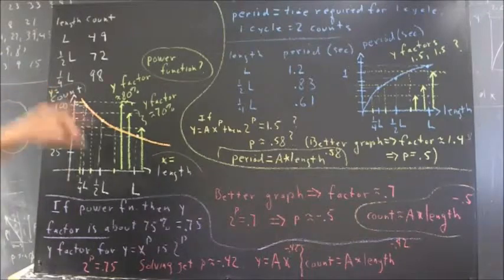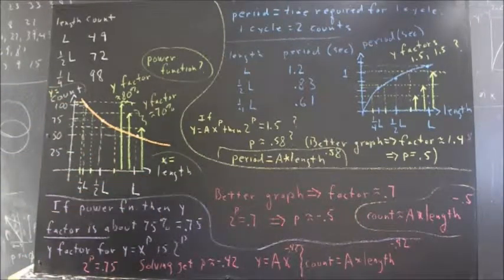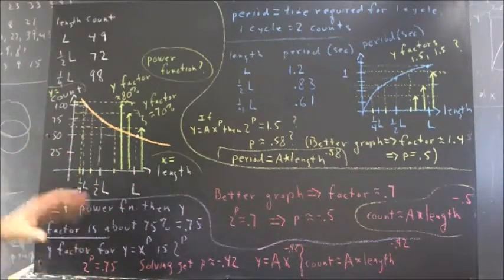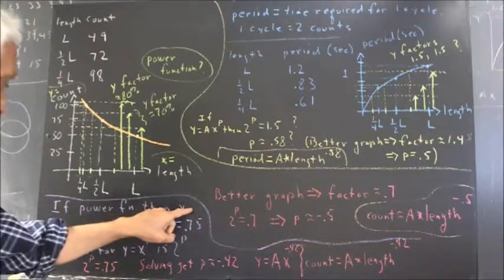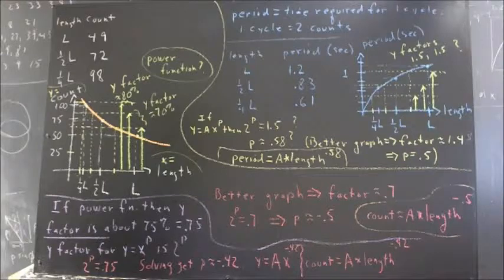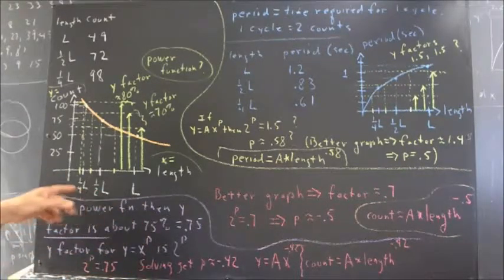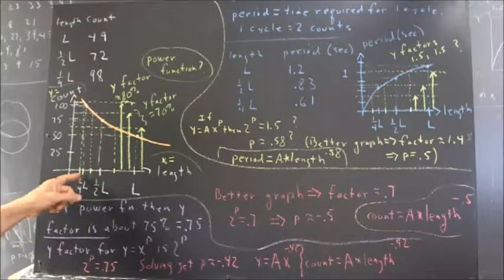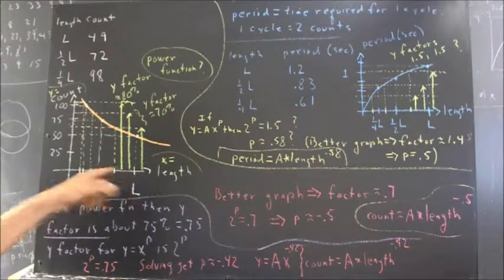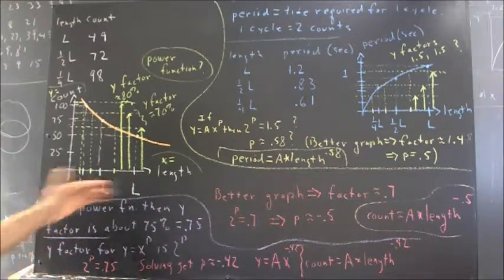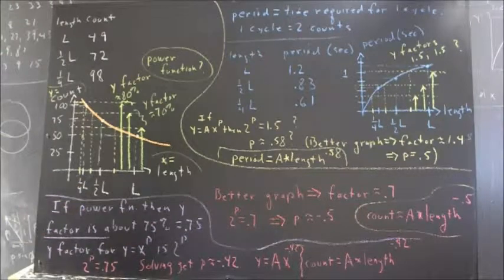We got this data, and here are our results. So y equals the count, x equals the length. Now, we know from what we've seen previously that if we have a power function, then the y factor for doubling x, and that's exactly what's happened here. We've taken the length and doubled it and doubled it. Actually, we halved it and halved it as the same effect.